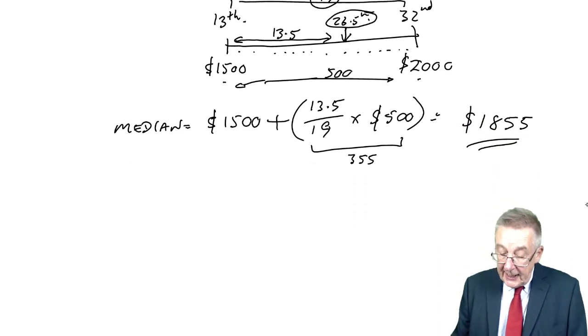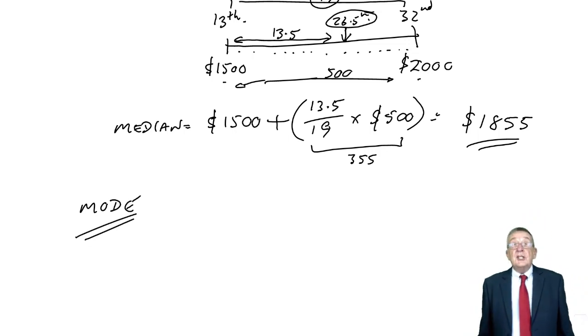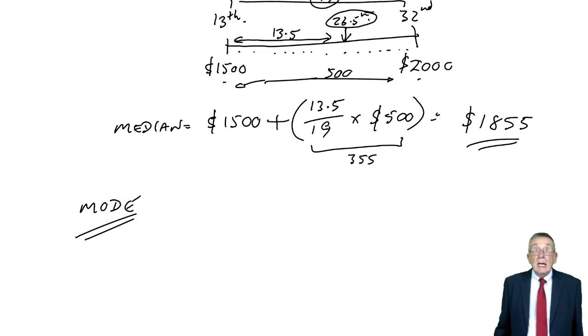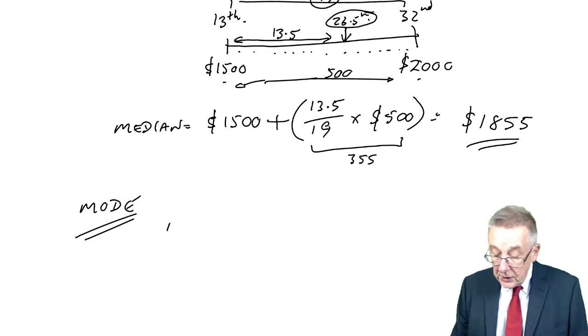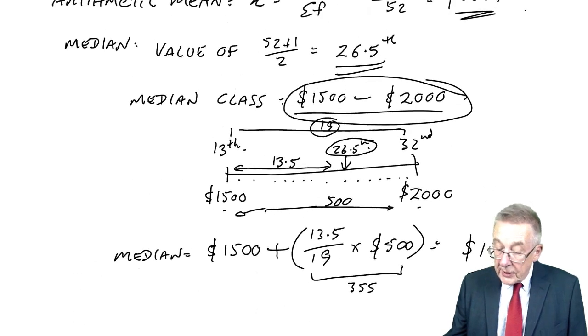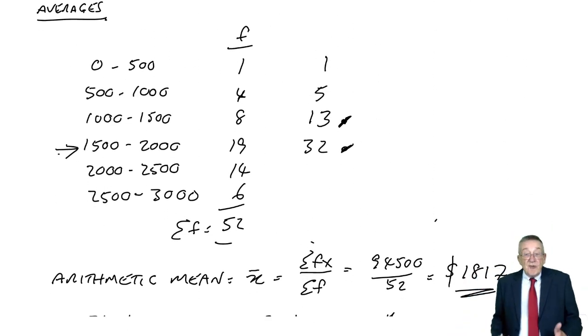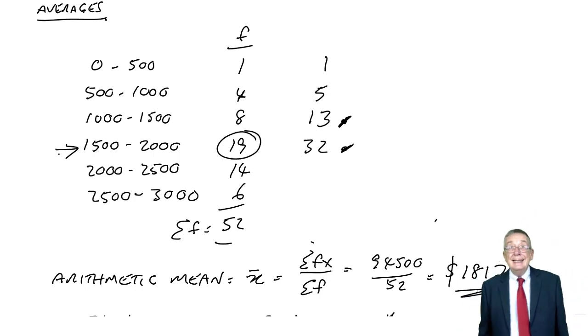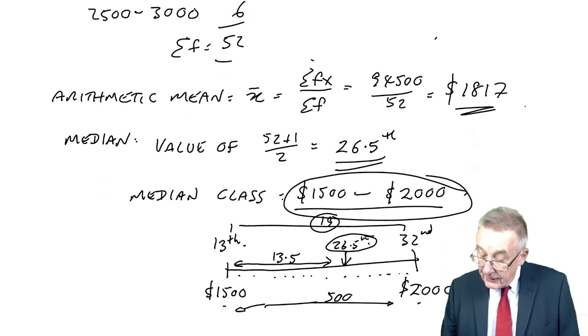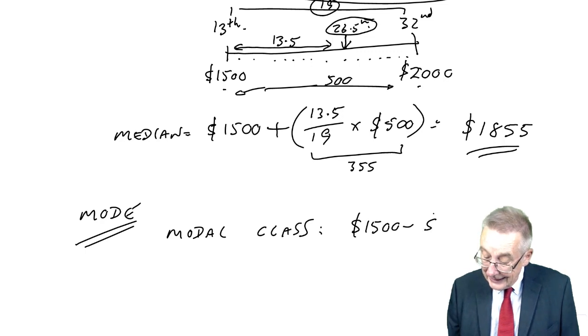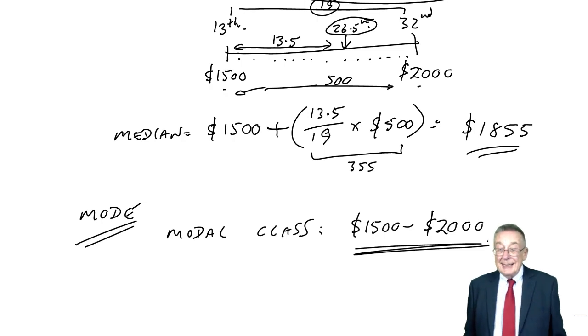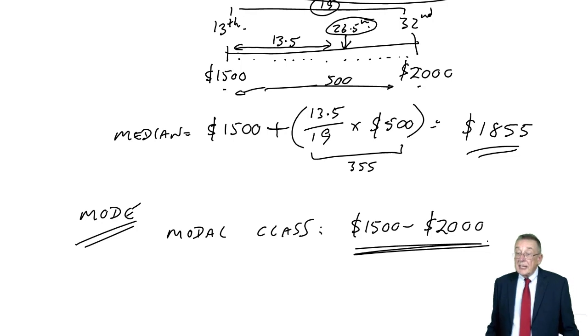And finally, and nice and easy here, the mode. Remember, in the previous lecture when we looked at discrete variables, the mode was the most frequently occurring observation. Same here, but we're not going to put a value on it. It would just be the modal class. Looking back at the table, for each of those classes or ranges or groups, which was the most common, the most popular? The biggest frequency was 19. So the most popular group or class is, as it turns out, 1500 to 2000.